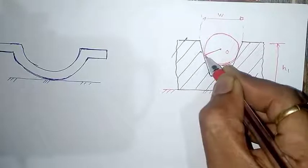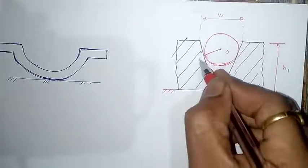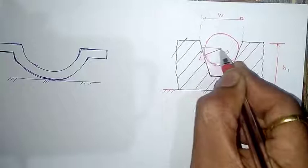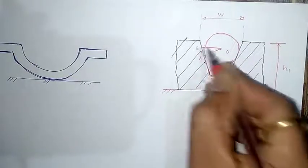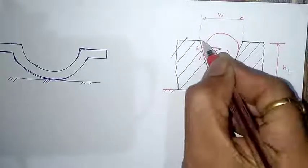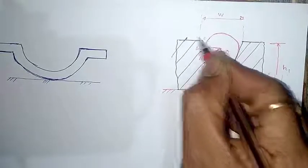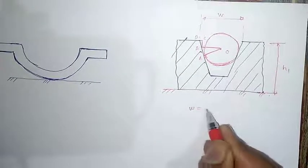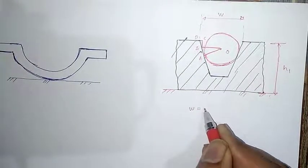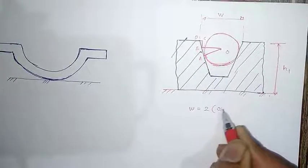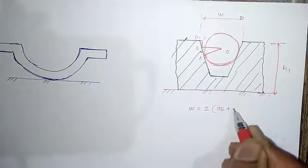This line will always be at 90 degrees. Let's call this point A. Draw a horizontal line and call this point B, then one more vertical line and a small horizontal line. Let's call this point C and this point D. Now, width W is equal to 2 times the distance OB plus CD.